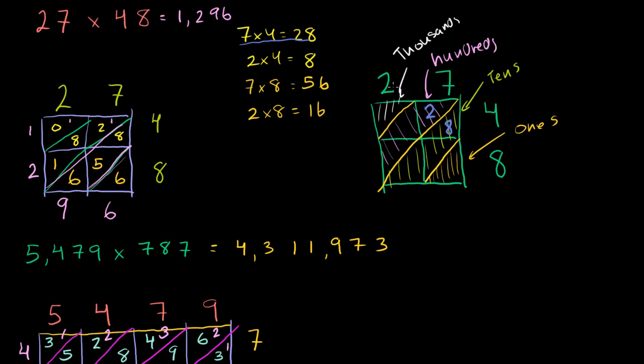And the best way to think about it, this 7, this is the 7 in 27, so it's just a regular 7. But this 4, it's the 4 in 48, so it's not just a regular 4, it's really a 40. 48 can be rewritten as 40 plus 8. This 4 right here actually represents a 40. So we're not really multiplying 7 times 4, we're actually multiplying 7 times 40. And 7 times 40 isn't just 28, it's 280.